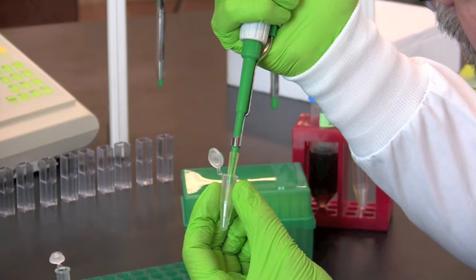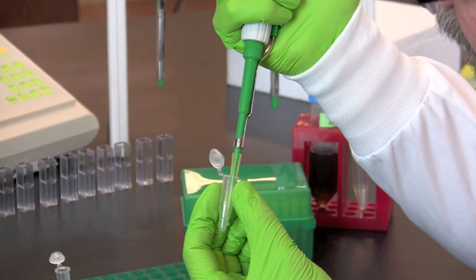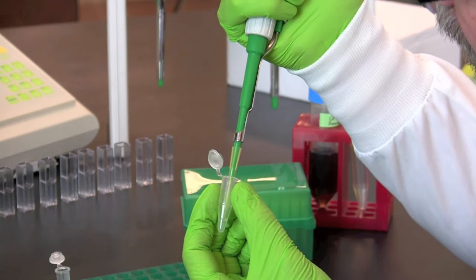Mix the milk sample and PBS by either pipetting or vortexing. This mixture has diluted the milk to 1 part in 50.